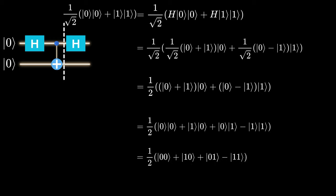After simplification, we have superposition of 0, 0, 1, 0, 0, 1 and 1, 1, all with the same probability.